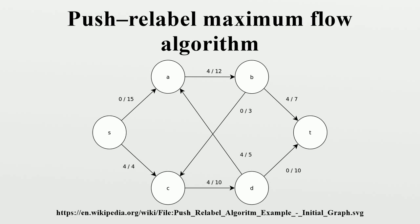Once initialization is complete, the algorithm repeatedly performs either the push or relabel operations against active vertices until no applicable operation can be performed. The push operation applies on an admissible out-edge of an active vertex U in GF, moving delta units of flow from U to V, where delta equals the minimum of the excess at U and the residual capacity of the edge. A push operation that causes the flow to reach capacity is called a saturating push. Otherwise, all of the excess at the vertex is pushed across the residual edge, which is called an unsaturating or non-saturating push.